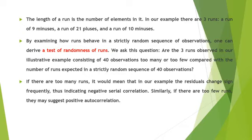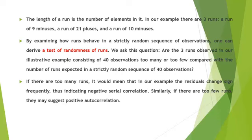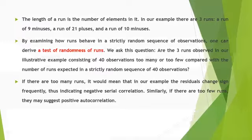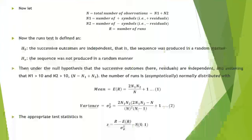We ask: are the three runs observed in our illustrative example of 40 observations too many or too few compared with the number of runs expected in a strictly random sequence? If there are too many runs, it means the residuals change sign frequently, indicating negative serial correlation. If there are too few runs, residuals are clustered in one sign and do not change frequently, suggesting positive autocorrelation.